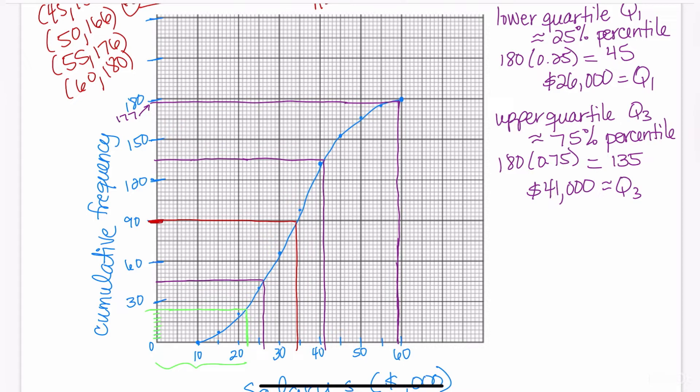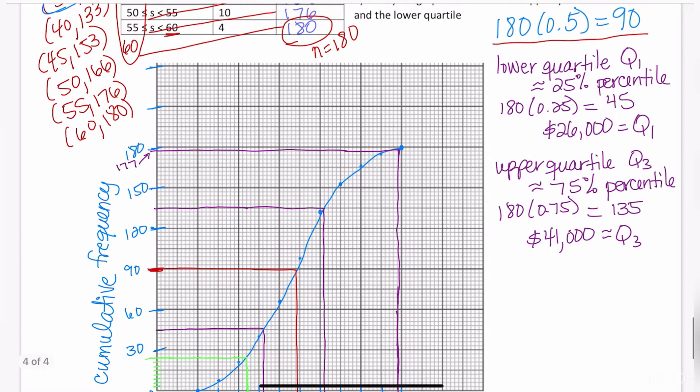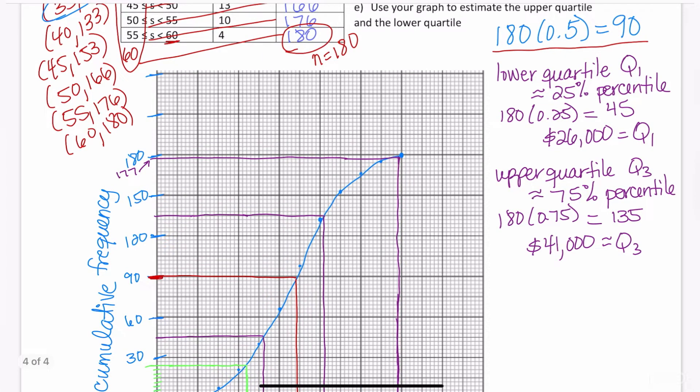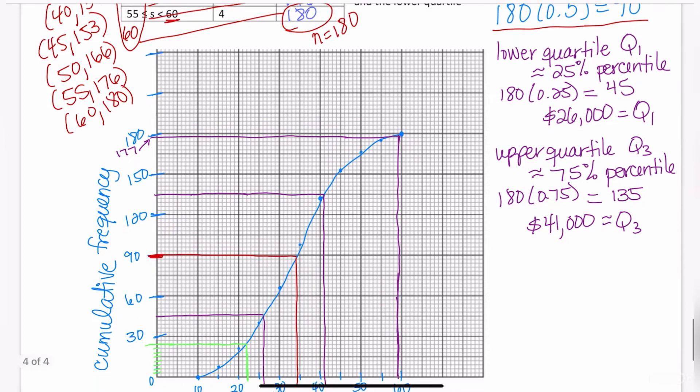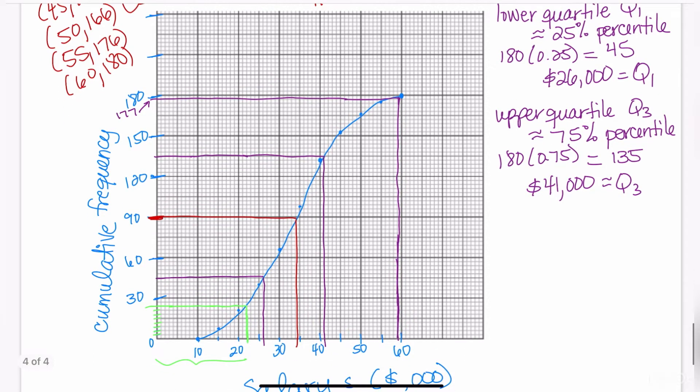Once again, the way we found our quartiles was to take N, which is the total amount of values. In this case, it's going to be 180. You locate the lower quartile, Q1, by taking 180 by 0.25. We went to 45 on the Y-axis. We went across and then touched the graph and we came straight down.